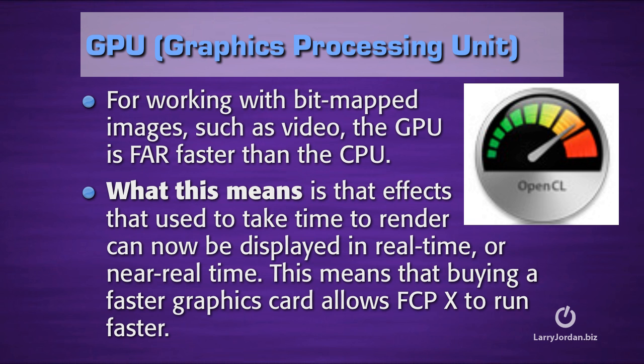By moving calculations from the CPU to the GPU — the graphics processing unit — bitmapped images such as video render far faster when the GPU is involved than when the CPU is involved. What this means is that effects that used to take time to render can now be displayed in real time or near real time. This means that buying a faster graphics card allows Final Cut Pro X to run faster. The current version of Motion — Motion 4 — is already taking advantage of the GPU, but Final Cut never has. With Final Cut Pro X, that changes.